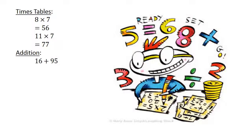Addition. 16 plus 95 equals 111. Subtraction. 16 minus 79 equals negative 63.